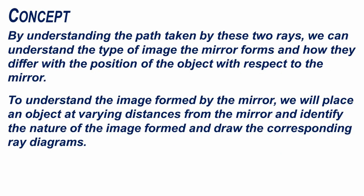By understanding the path taken by these two rays, we can understand the type of image the mirror forms and how they differ with the position of the object with respect to the mirror. To understand the image formed, we will place the object at varying distances from the mirror, identify the nature of the image formed, and draw the corresponding ray diagrams.